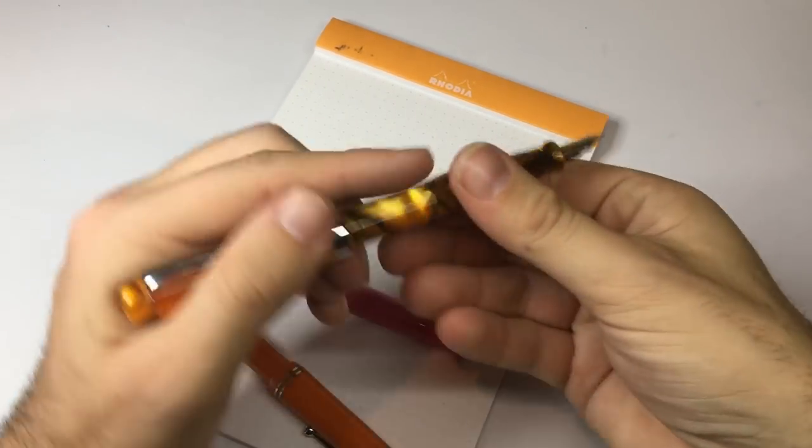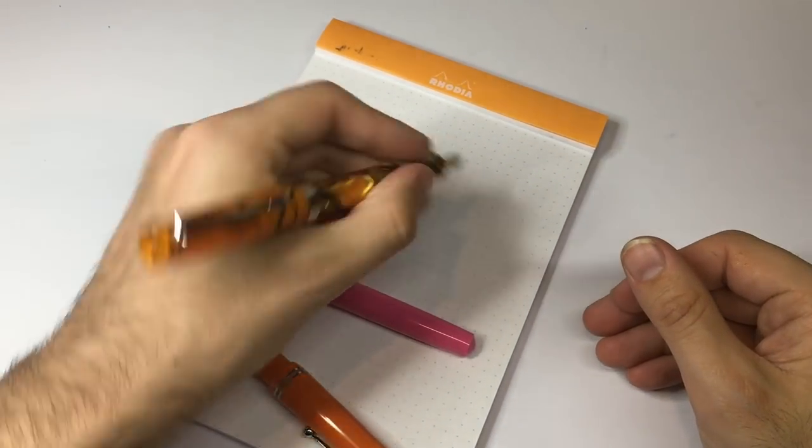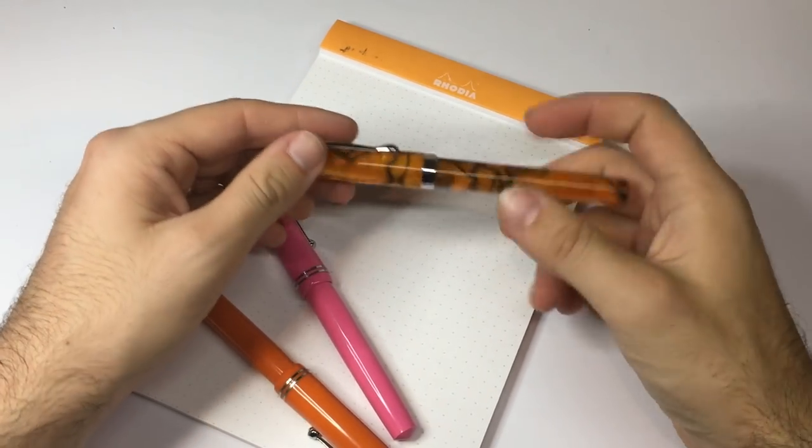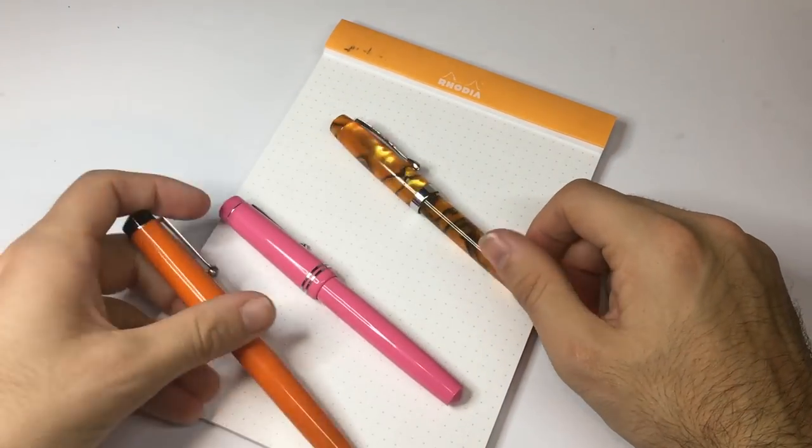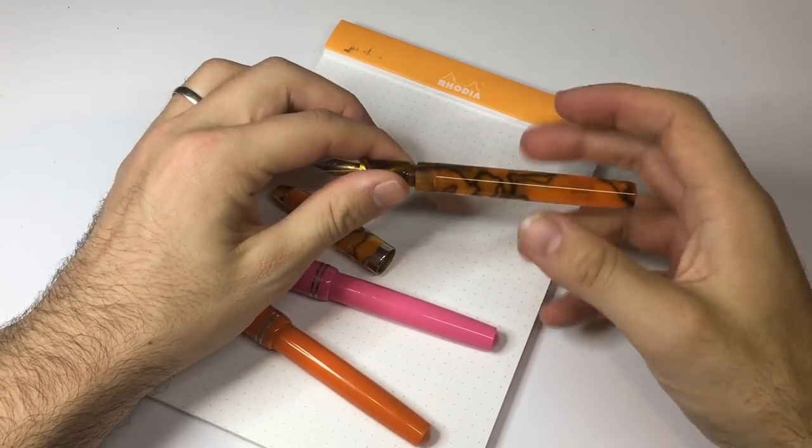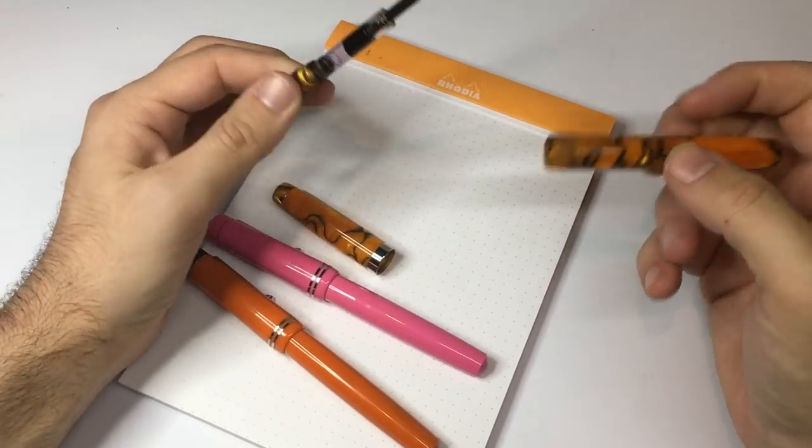So it's got a lot going for it, as does the Himalaya. It's a smaller pen, it's got a smaller nib and a much smaller section, but it's very comfortable in the hand. That's a lovely pen to write with and this material is beautiful. Now all of these pens are cartridge converter pens.